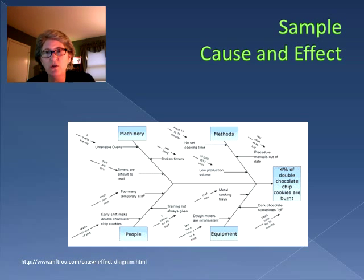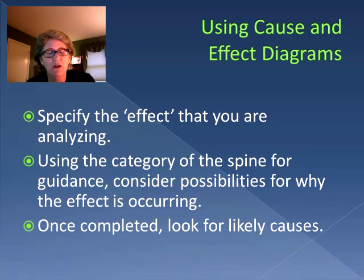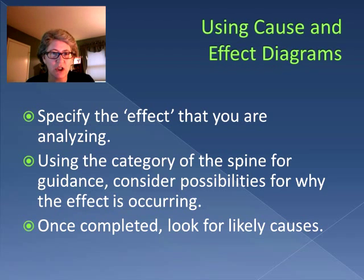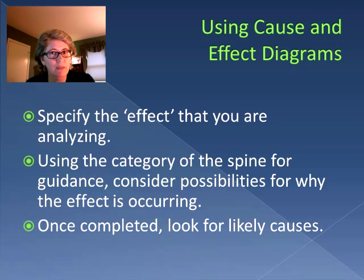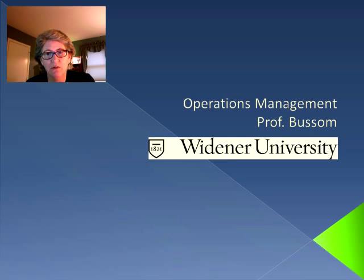When using a cause and effect diagram, the first thing to do is specify the effect you're analyzing — what's the problem or situation? Then, using the categories of the spines as guidance, consider why the effect is occurring. Once completed, you're able to look for the likely causes. It's one of the best of the seven tools of quality for analyzing why something is actually happening.